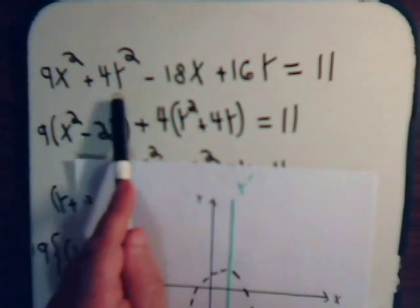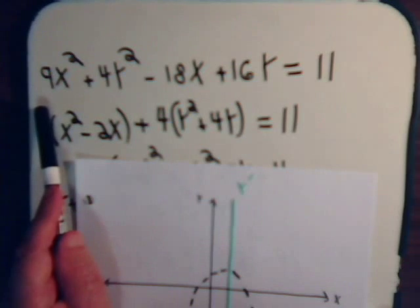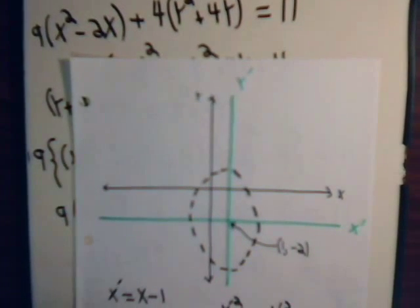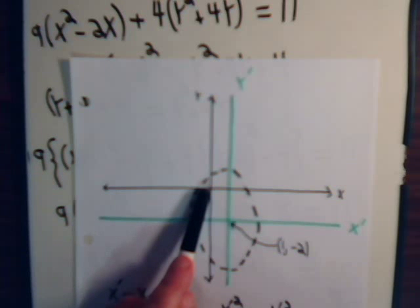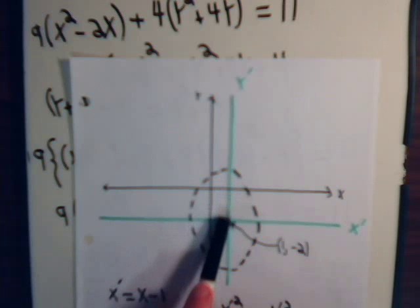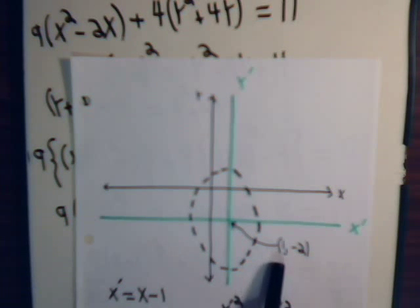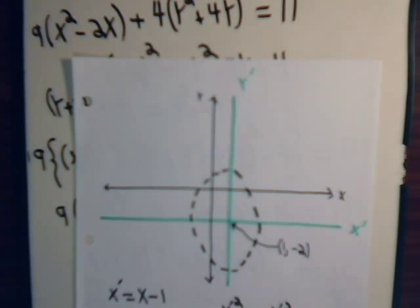This just simply indicates to us that the center of the system, this 0,0 point, has been transferred to the right and down, so that this is now the center of our system at the point 1 minus 2. So this is just a simple translation of the axis, nothing special here.